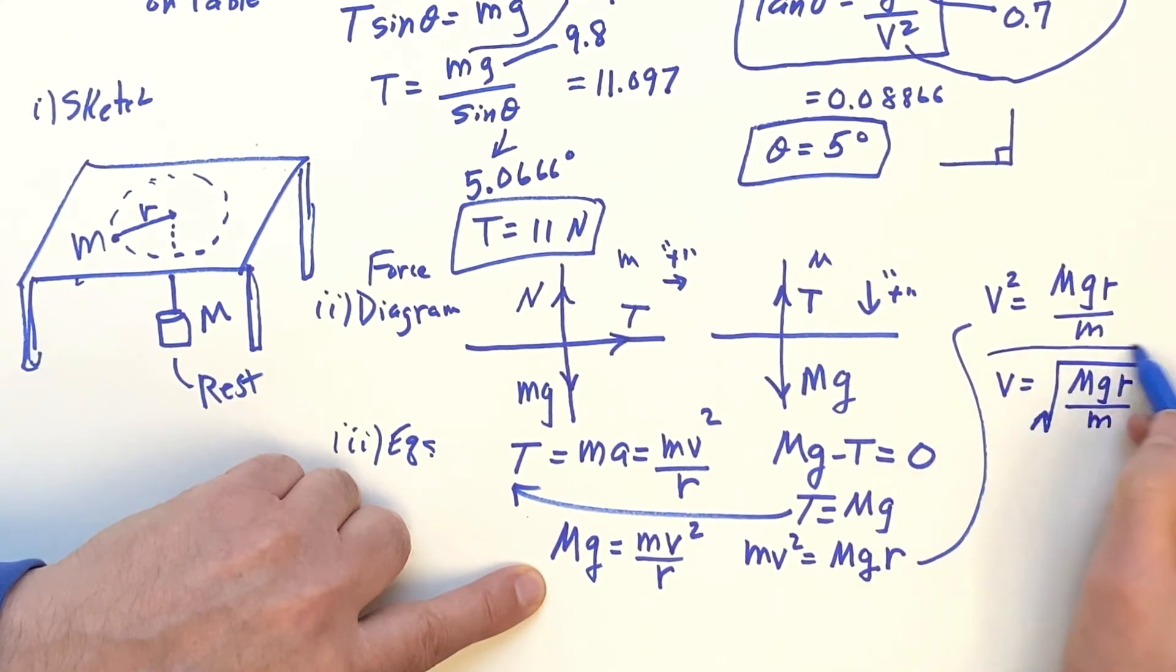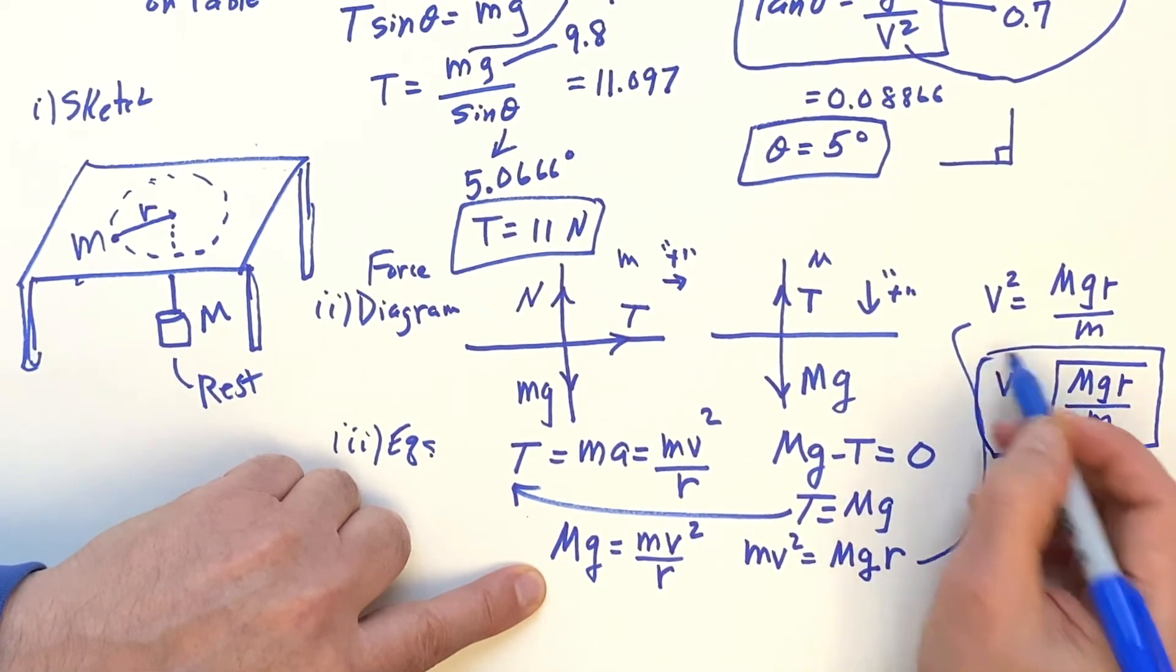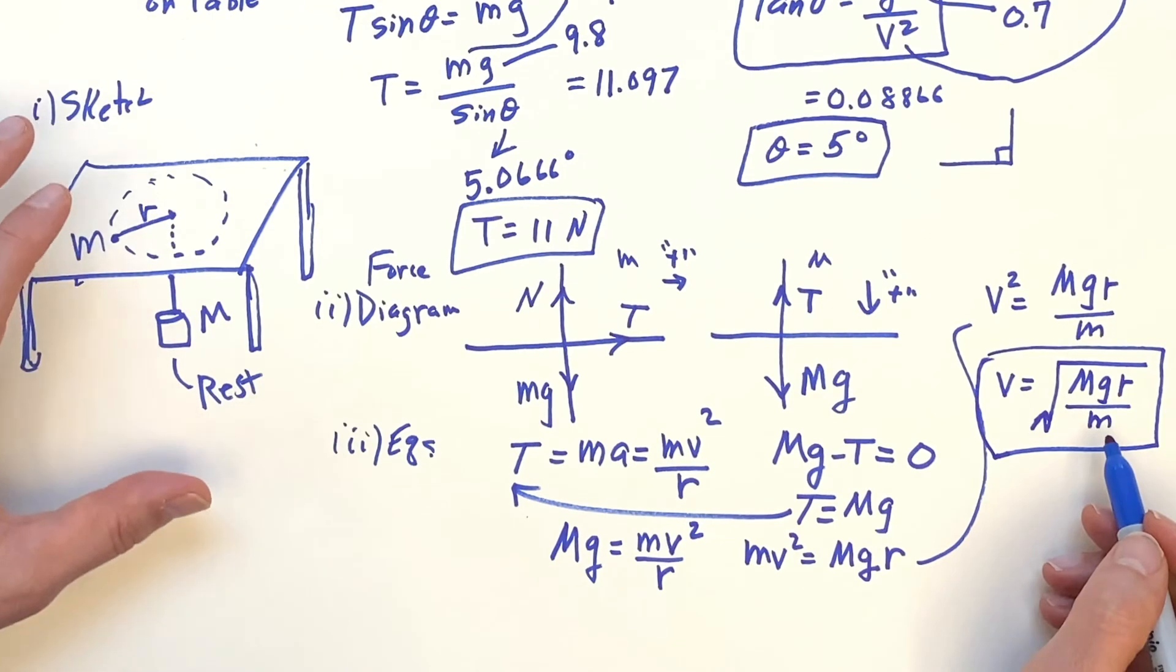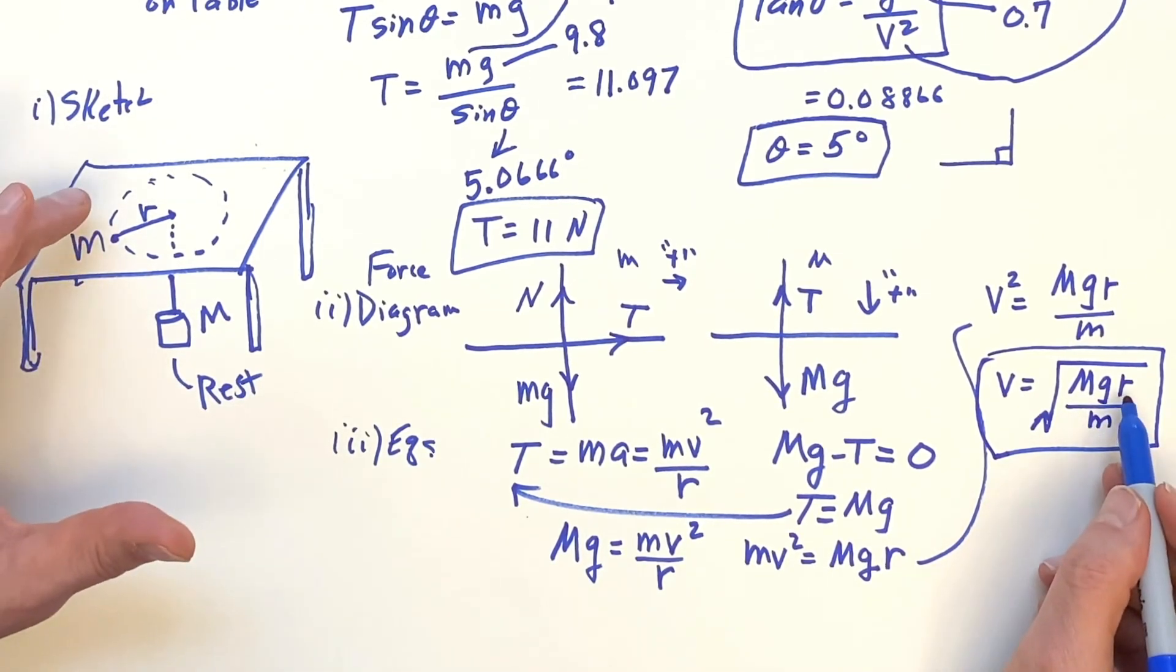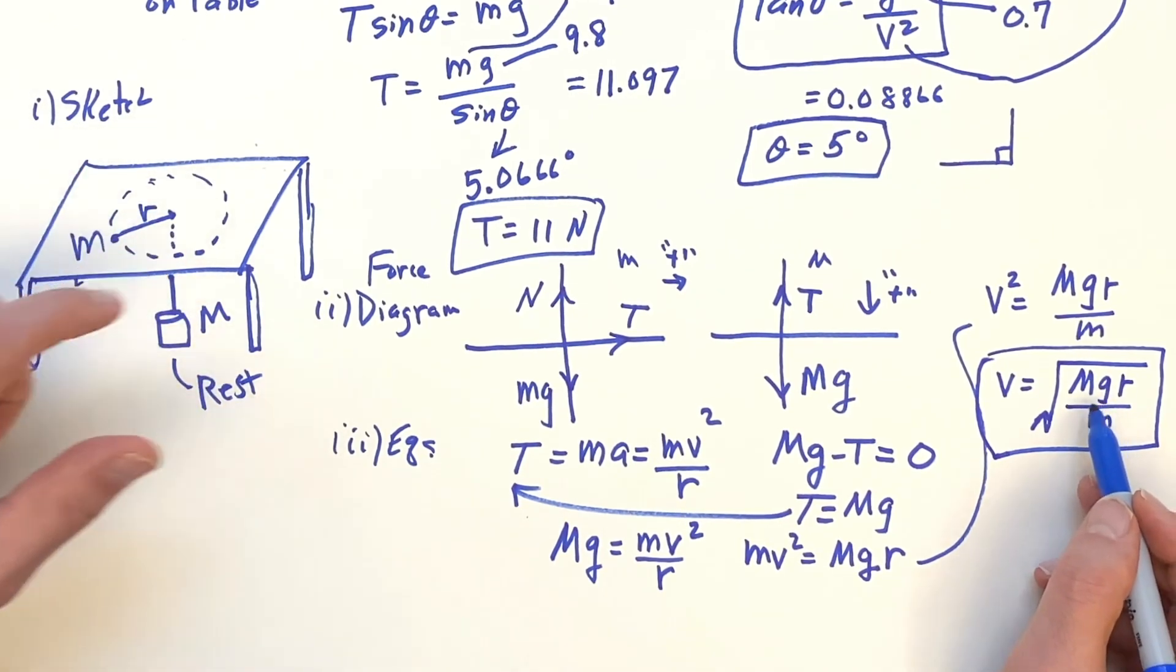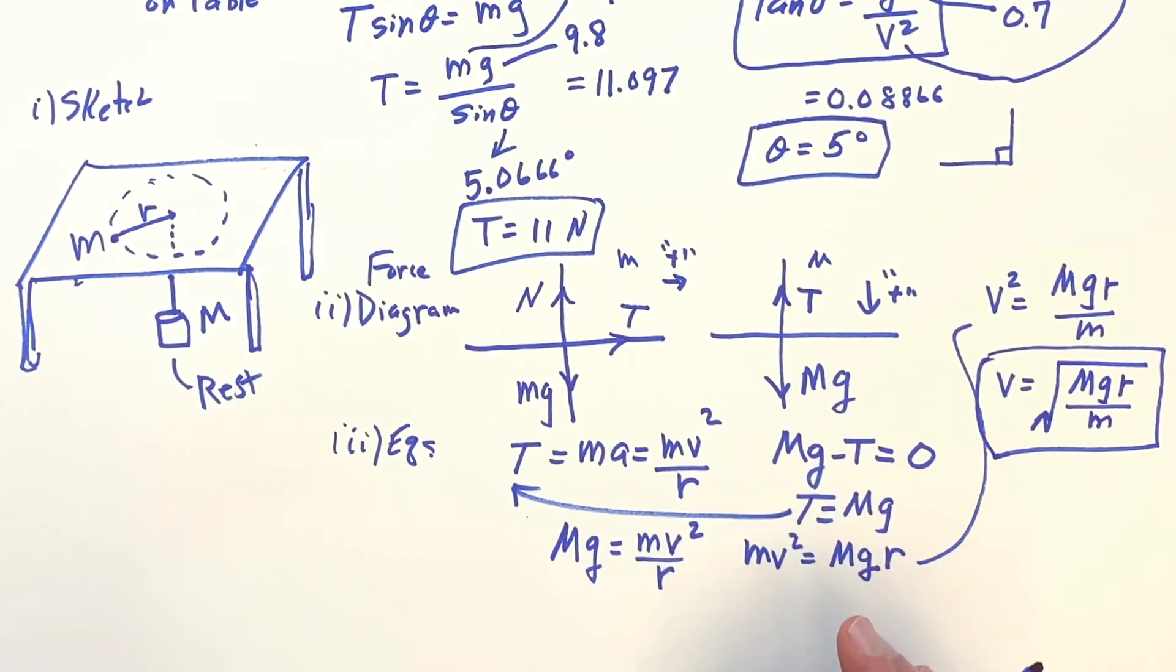What a neat little equation there. And that gives you the situation where, given your big M, given your little m, given your r, and the planet you're on, g, you've got to be going around with that velocity to make this all work.